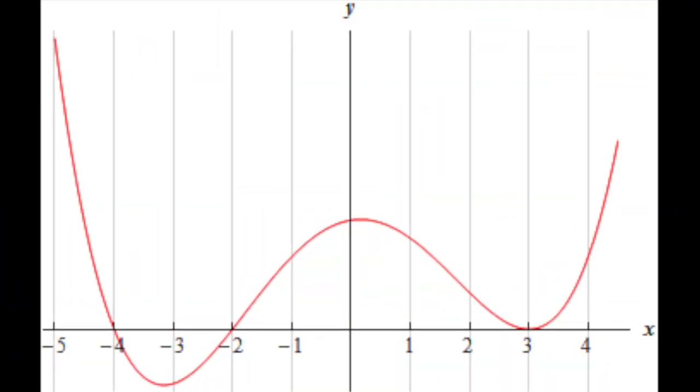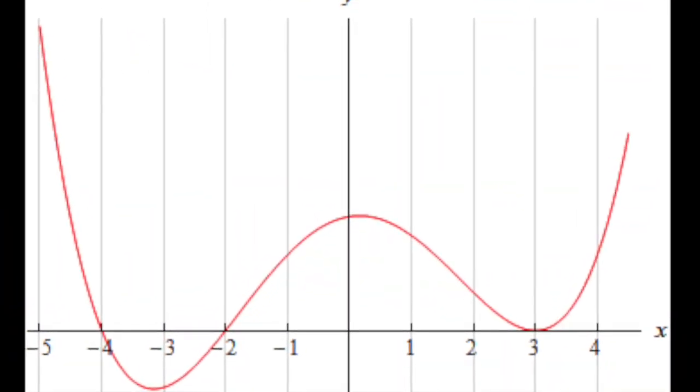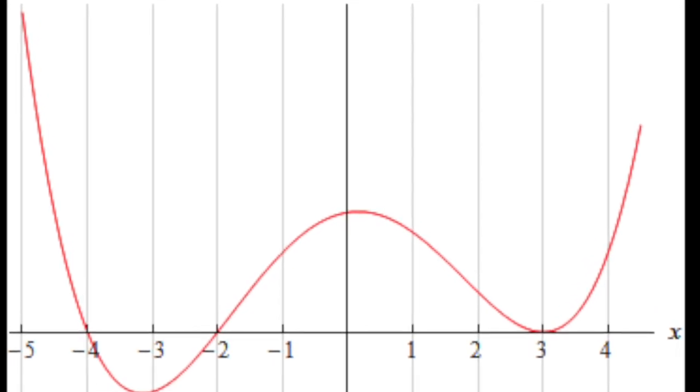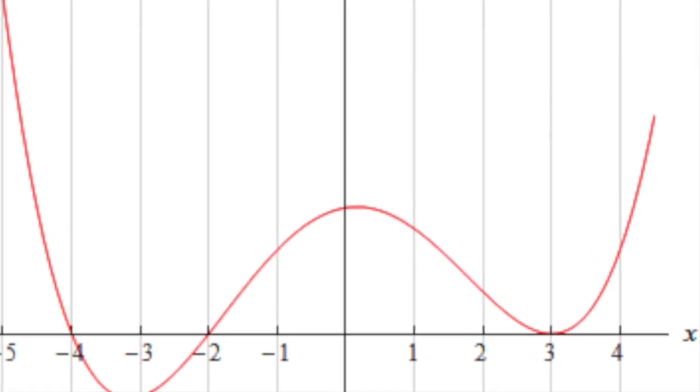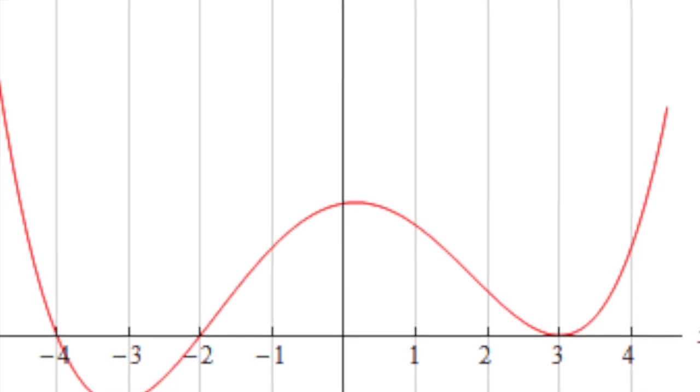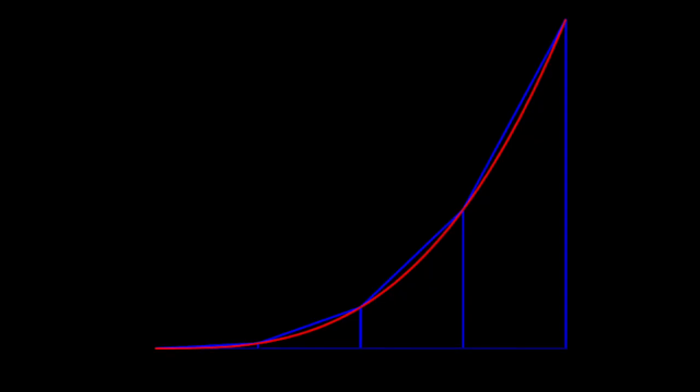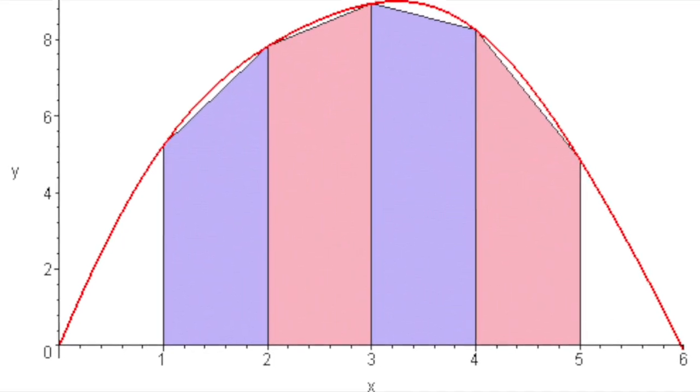Another important thing to keep in mind when using the trapezoidal approximation method is whether or not the area generated is an over-approximation or an under-approximation. This can easily be determined by looking at the curve's concavity. If the curve is concave up, the estimation will be an over-approximation. If the curve is concave down, the approximation will be an under-approximation.